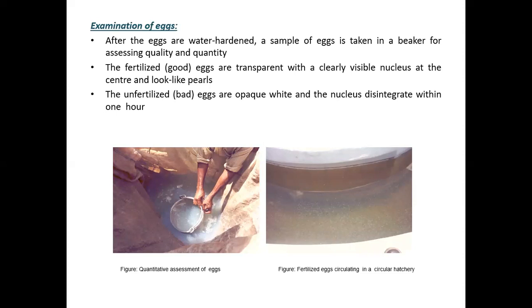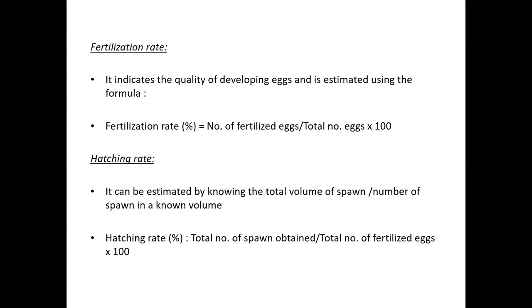For egg examination, after the eggs are water-hardened, a sample is taken in a beaker for assessing quality and quantity. Fertilized eggs are transparent with a clearly visible nucleus at the center, while unfertilized eggs are opaque white. Nuclei disintegrate within one hour. The fertilization rate can be calculated using the formula: Fertilization rate = (number of fertilized eggs / total number of eggs) × 100. The hatching rate can also be estimated by knowing the total number of spawn in a known volume.